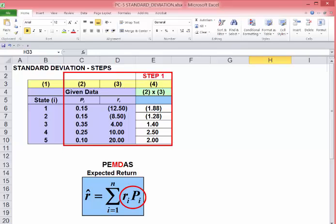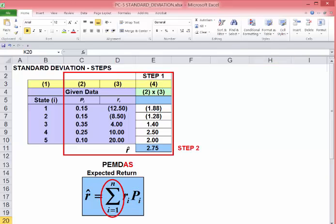Repeat that for all states of the economy. That takes care of the multiply part of the equation. Second step, add those values we just calculated. That's the summation sign, where n is the number of states of the economy, and there's our expected return, 2.75.